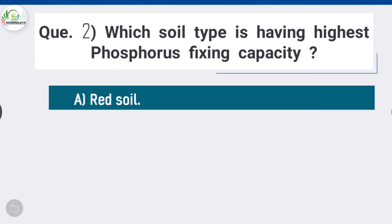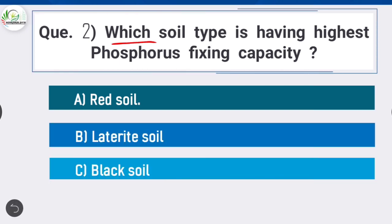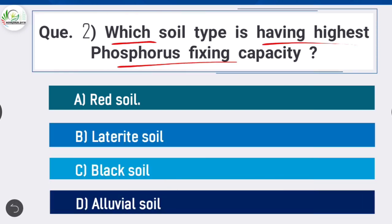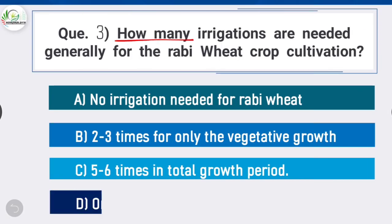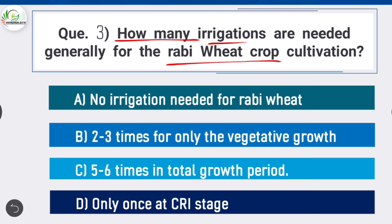Molecular weight of fulvic acid is the lowest and it is the lightest in color among all. Question 2: Which soil type has the highest phosphorus fixing capacity? Option A is correct: red soil. Red soils are formed mainly by alfisol soil orders. Red soils have high phosphorus fixing capacity because of the presence of kaolinite clay mineral.